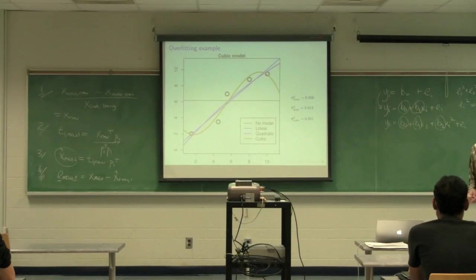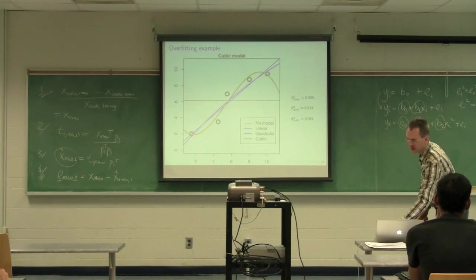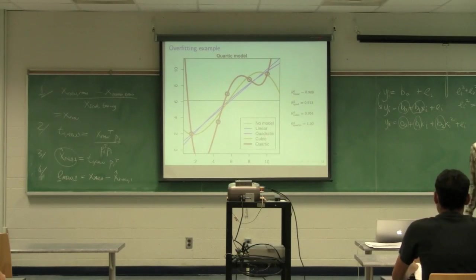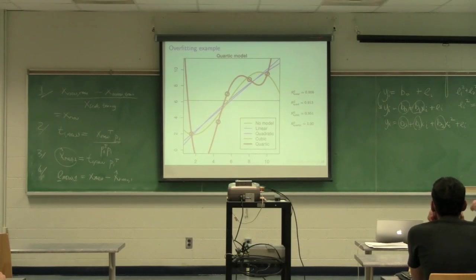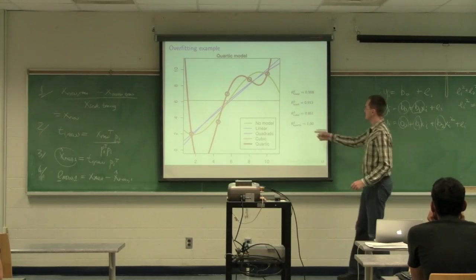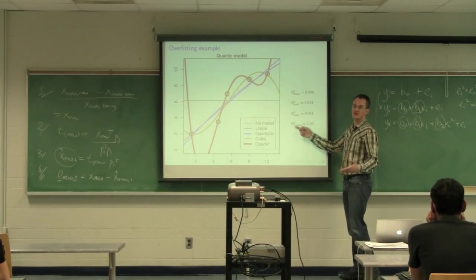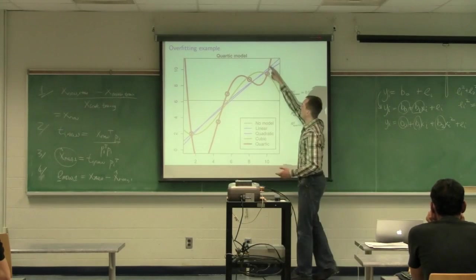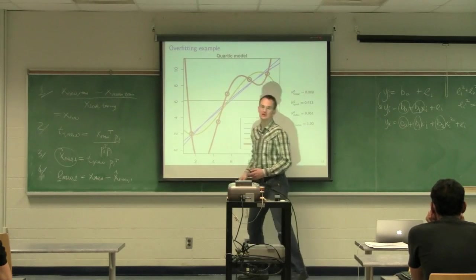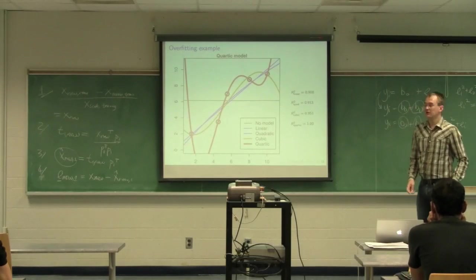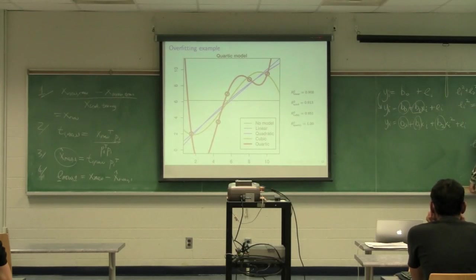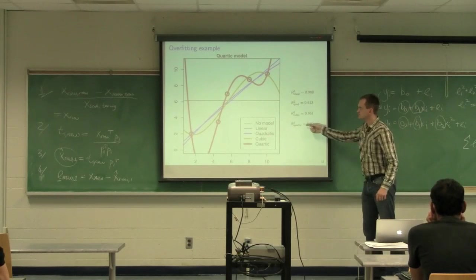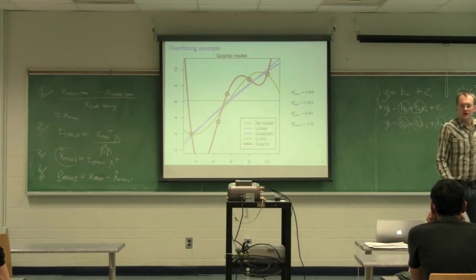I could then obviously add a cubic term, and as you see in your notes, r squared goes up again by quite a bit this time. And then finally, I could fit a quartic model, which has five parameters and five unknowns. So I fit that red line goes exactly through every one of my data points. And my r squared will be identically equal to one for that final quartic model.